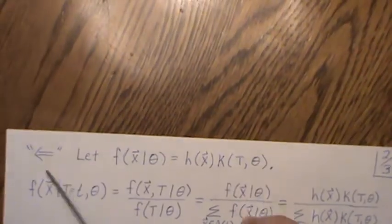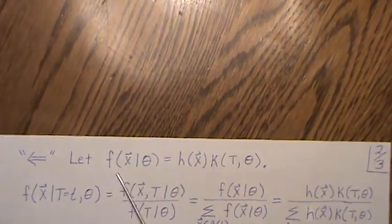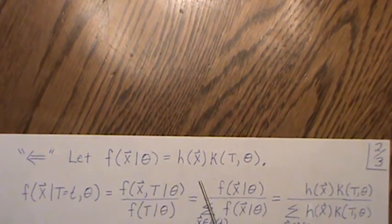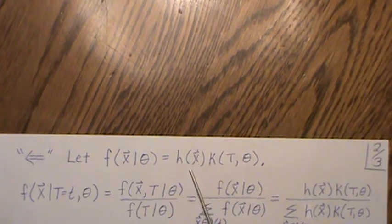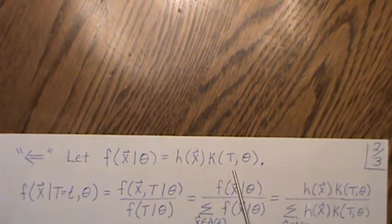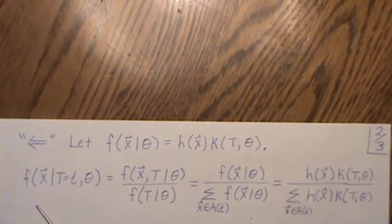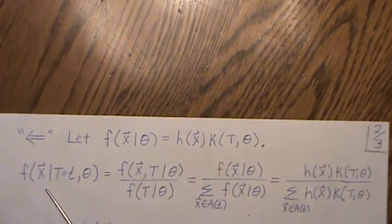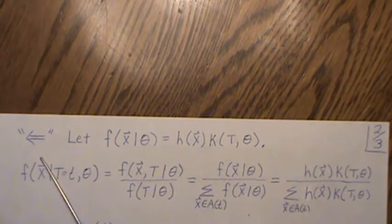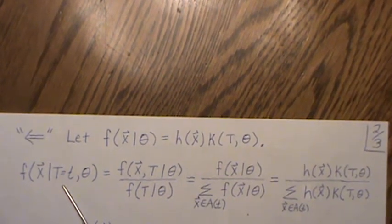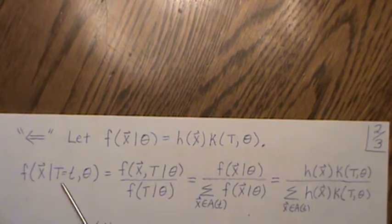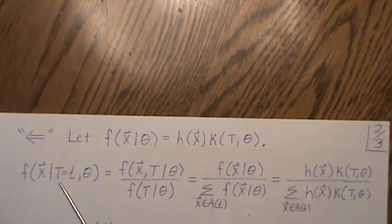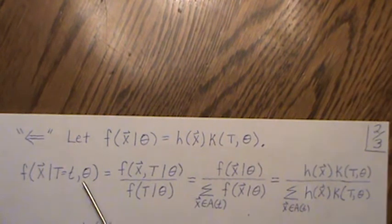Now let's prove it the other way. Let's assume that the joint distribution factors according to the theorem into h of x and k of t and theta. We need to show that the conditional distribution of x given t is independent of theta, because if it is, then t is a sufficient statistic for theta.